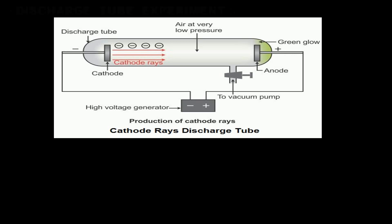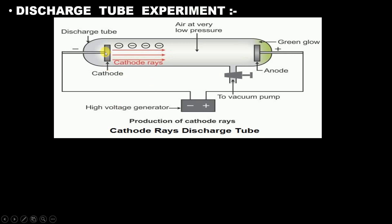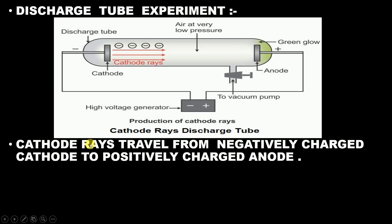In the discharge tube experiment, we have a negatively charged plate known as a cathode and a positively charged plate known as an anode. Under very low pressure and high voltage, certain rays are emitted by this cathode. These rays are known as cathode rays, and as we have seen, cathode rays consist of small particles known as electrons. The cathode rays travel from the negatively charged cathode to the positively charged anode.